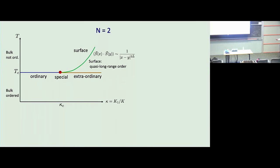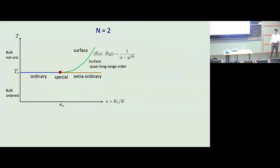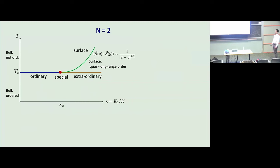When we take the XY model — N equal to two — the physics becomes more interesting. The layout of the phase diagram is the same, but the surface phase here doesn't have long-range order; it only has quasi-long-range order, because in two dimensions XY spins can only have quasi-long-range order. The green line is a purely surface phase transition in the 2D Kosterlitz-Thouless universality class, with power-law correlations on the boundary.